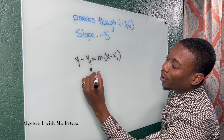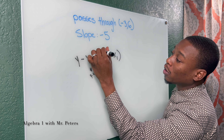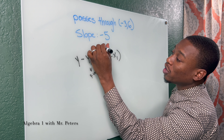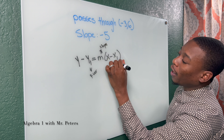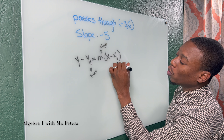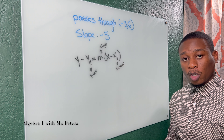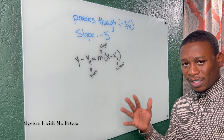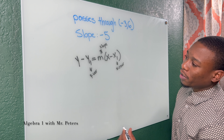Y1 is the Y coordinate, which they give us. M is the slope. And X1 is the X coordinate, which they gave us. So all we have to do is plug in and simplify.